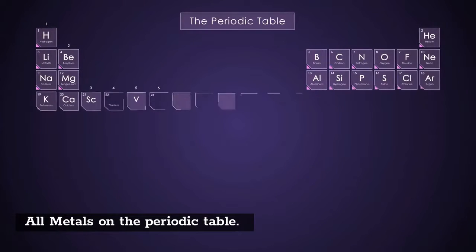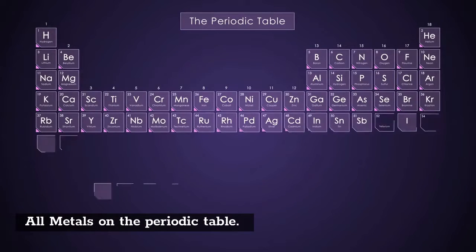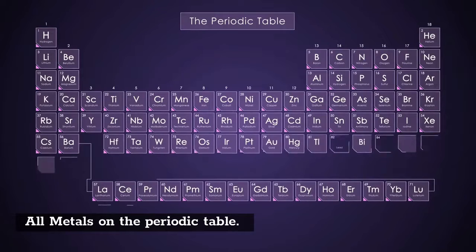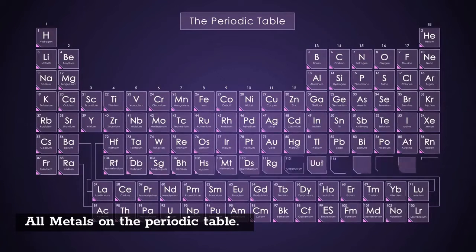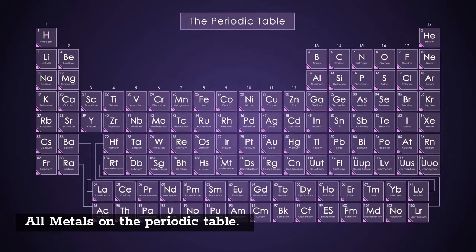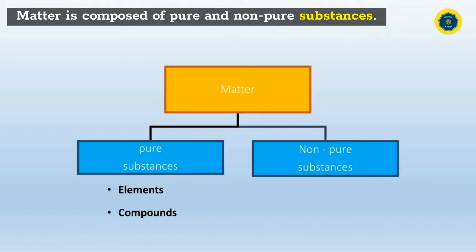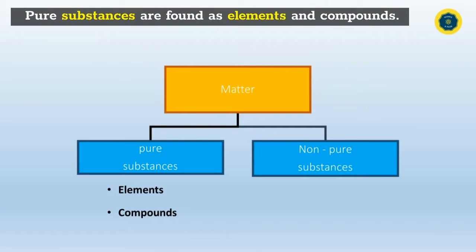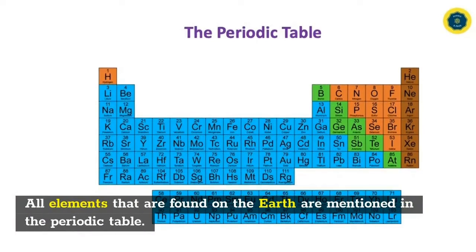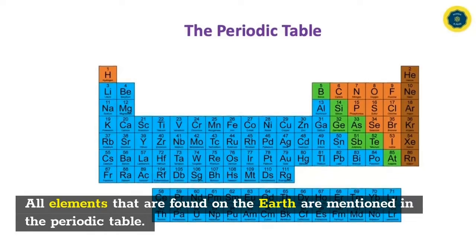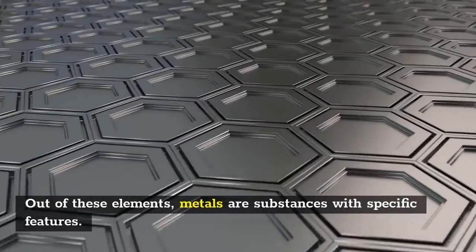All metals on the periodic table. Matter is composed of pure and non-pure substances. Pure substances are found as elements and compounds. All elements found on the earth are mentioned in the periodic table. Out of these elements, metals are substances with specific features.